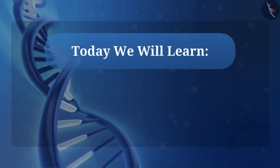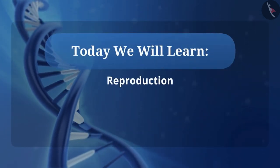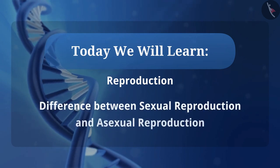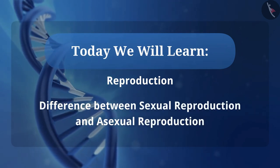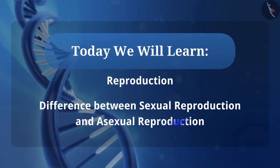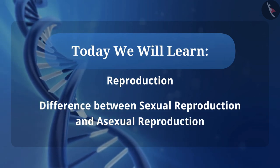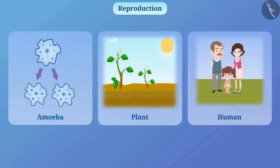Today we will learn important things about reproduction and the difference between sexual reproduction and asexual reproduction. Reproduction is a process in which an organism produces its offspring. For example, an amoeba gives birth to another amoeba, a plant produces another plant similar to it, and human beings produce children.